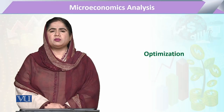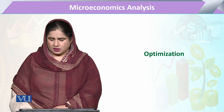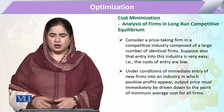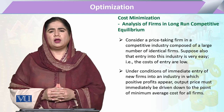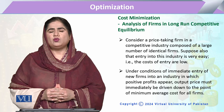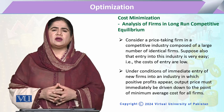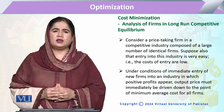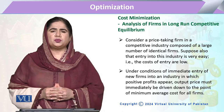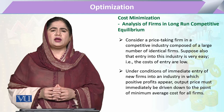In the chapter of optimization, today's topic is the analysis of firms in the long-run competitive equilibrium. When we say competitive equilibrium, it means there are many firms in competition prevailing in the market.